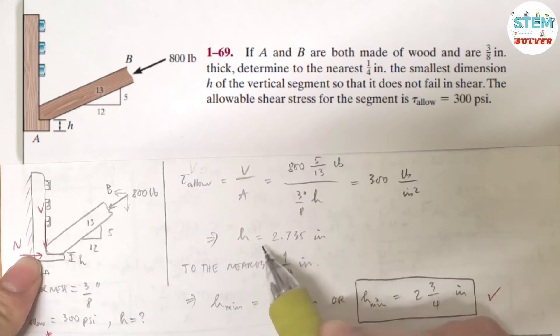So this is your answer. But the question also asks you to determine the smallest H to the nearest one-fourth inch. What does that mean?